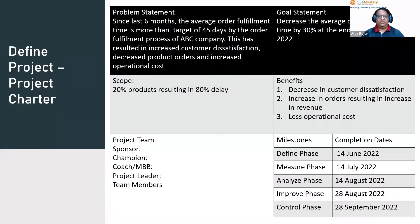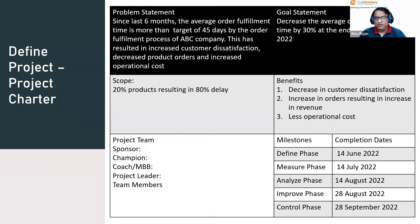Both deliverables, we define the project charter. The project charter includes a problem statement, the goal statement, the scope of the project, benefit of the project, the project team — who is going to be the project team members — and the milestones, where we write the completion dates for each phase.